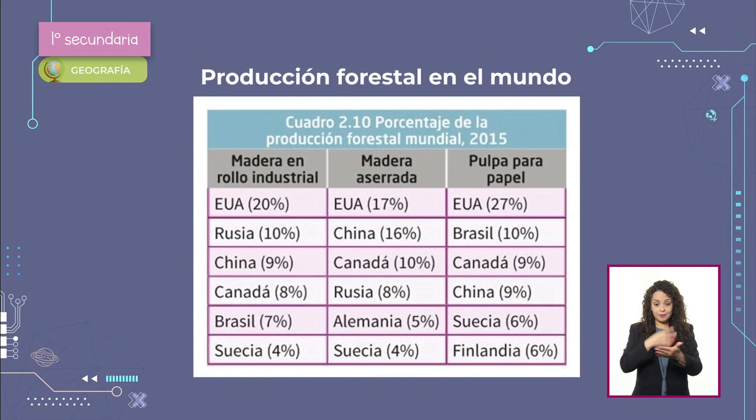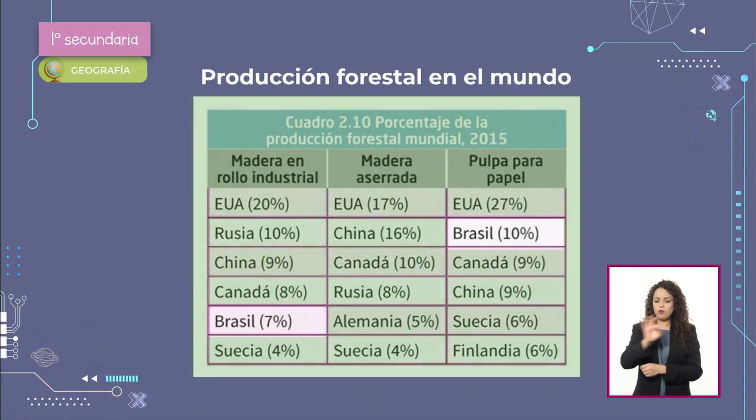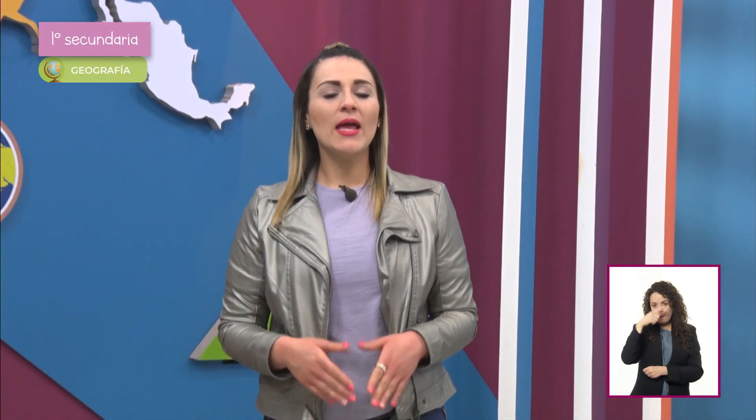Algunas de las cremas corporales que utilizamos contienen esos recursos. Estados Unidos de América, China, Rusia, Canadá y Brasil, entre otros países, presentan el mayor porcentaje de la producción forestal mundial. En las regiones áridas no hay recursos maderables, solo algunos árboles pequeños cuyos troncos y ramas se utilizan como combustible. Sin embargo, estas regiones son ricas en productos no maderables, como plantas de uso medicinal, esencias, colorantes y fibras que se utilizan para la ropa.